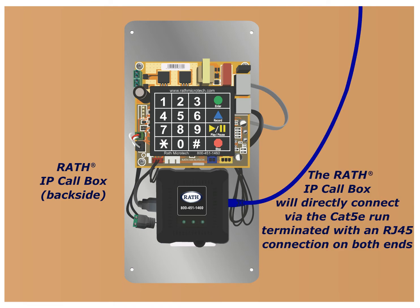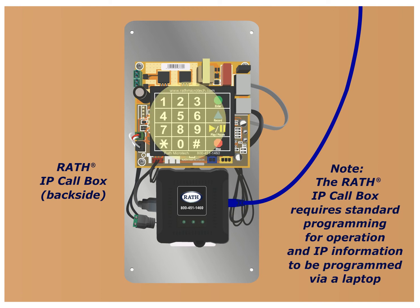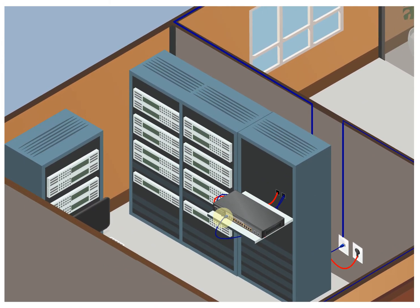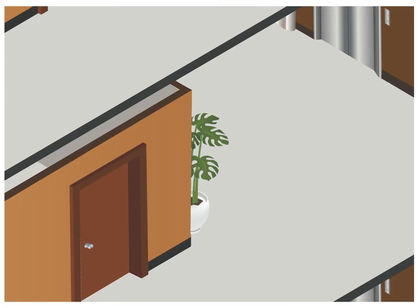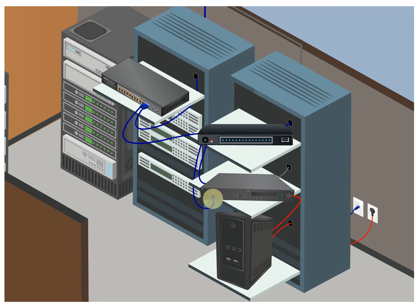The IP call box will directly connect via the CAT 5E run, terminated with an RJ45 connection on both ends. The IP call box is also powered from this POE Plus connection. The phone requires standard programming for operation and also requires IP information to be programmed via laptop. Take the Ethernet connection from the IP call box to the local network switch. This local network switch is then connected to the main floor network switch and/or router. Connect the IP command center's distribution module to the building router via an Ethernet cable.